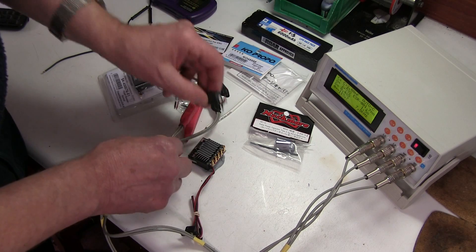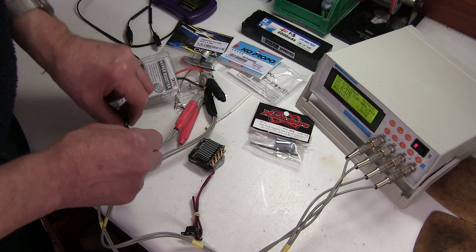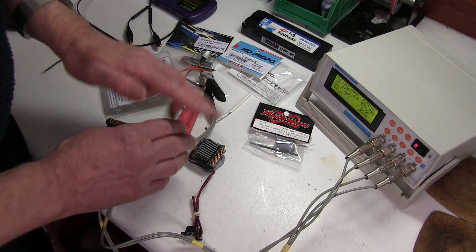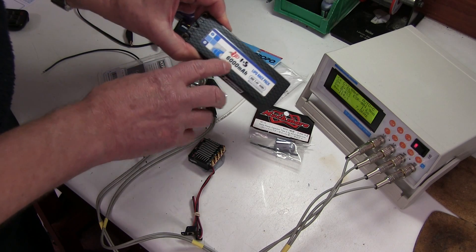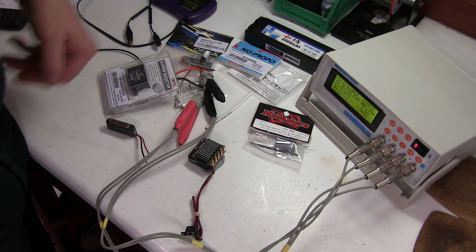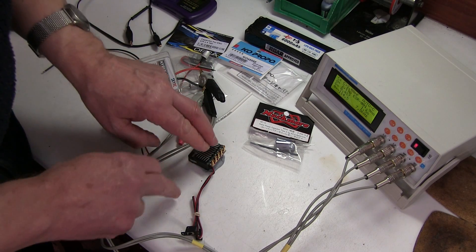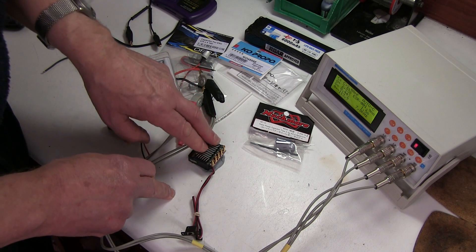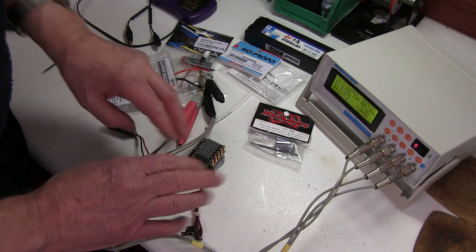Some people say a bigger capacitor reduces interference. Well interference can be caused by a speed control if you don't have a capacitor at all, because as I said you can get voltage spikes as it switches on and off which can affect the receiver. Can also if you've got a low power battery cause the voltage to go up and down which gets into the receiver and can cause all sorts of glitches. So that's another reason for having a capacitor on the speedo.